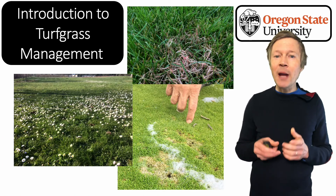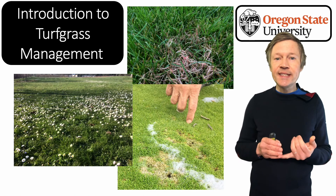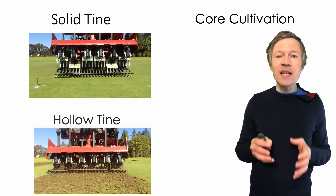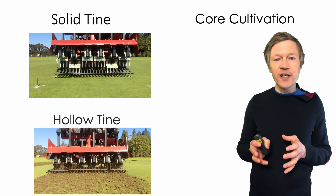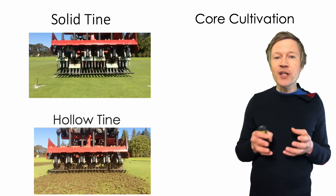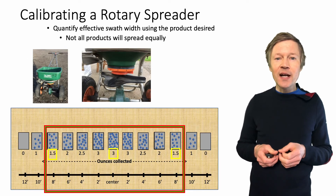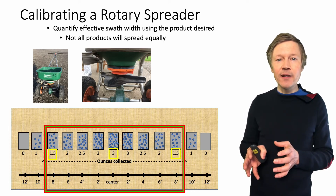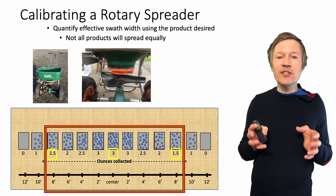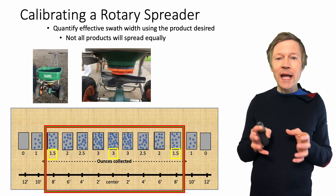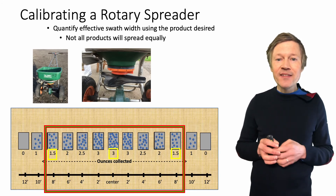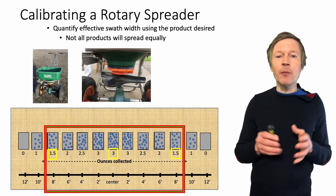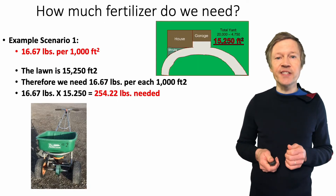We're going to be talking about the three primary pests: diseases, weeds, and insects of turfgrass. We're going to be talking about how to manage thatch, either through core cultivation, verticutting, sand top dressing, etc. We're going to be talking about how to apply the perfect amount of product to a perfect area, and in order to do that, we're going to get into calibrating rotary and drop spreaders. By the end of this class, you're going to know what that little cone is for at the bottom of your rotary spreader in order to get a proper distribution of product over your site.